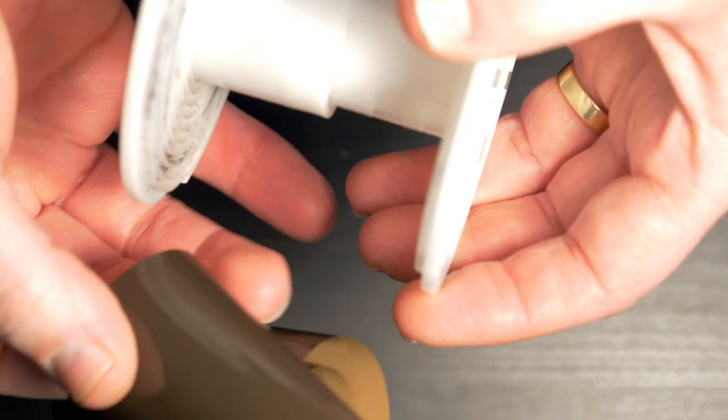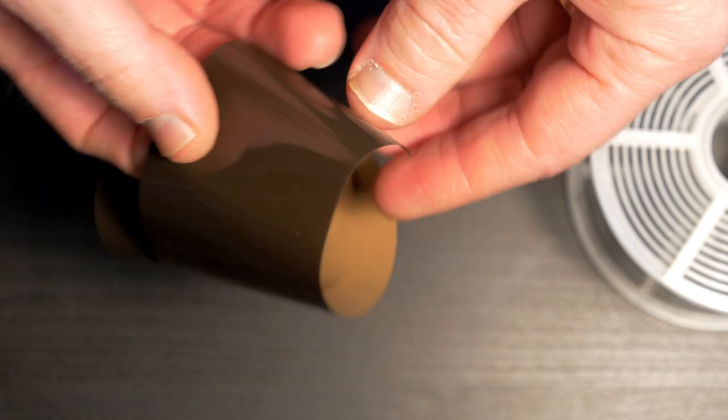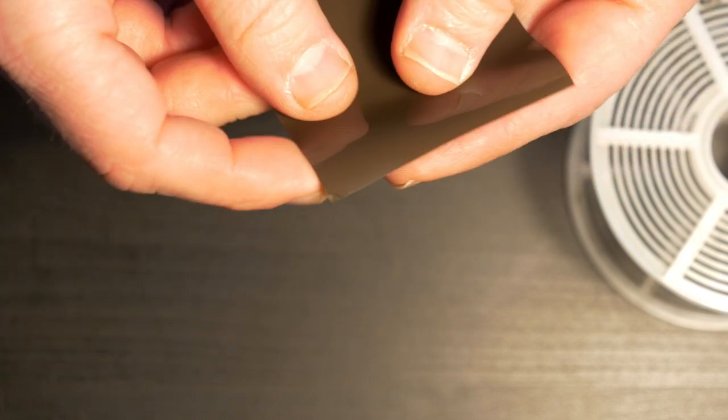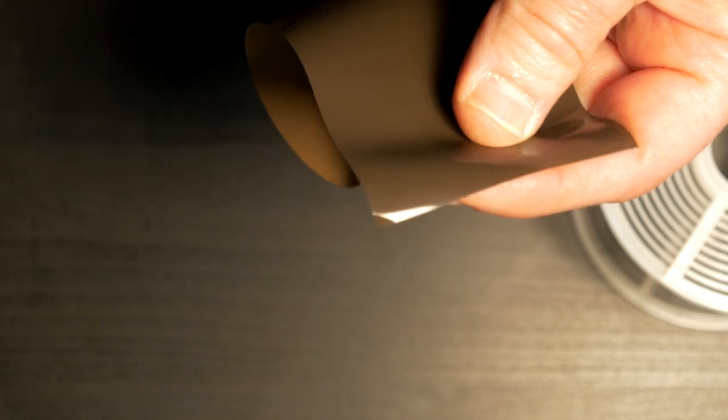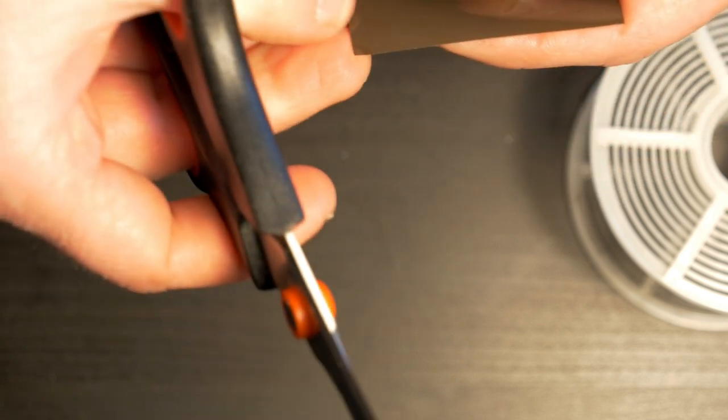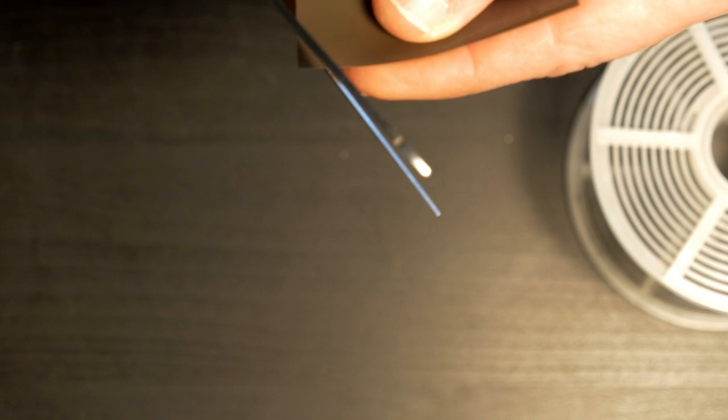What I discovered was if you simply take a pair of scissors and trim the corners from either side of the film that you're about to load, it actually ends up working a lot easier.